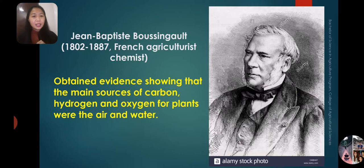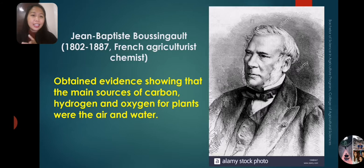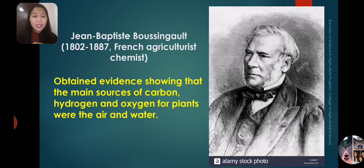Jean-Baptiste Boussingault existed from 1802 to 1887. He was a French agriculturist and agricultural chemist. He obtained evidence showing that the main sources of carbon, hydrogen, and oxygen for plants were the air and water. He was the first to discover that carbon, hydrogen, and oxygen were taken from the air and water.